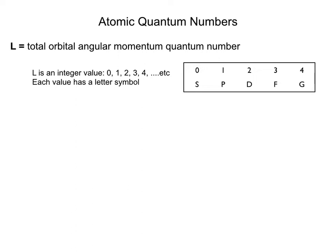Capital L is the total orbital angular momentum quantum number — an integer value of 0, 1, 2, 3… — with capital letter abbreviations: L=0 is S, L=1 is P, L=2 is D, and so on. Capital S is the total spin quantum number and can have values of 0, ½, 1, 3/2, 2, etc.